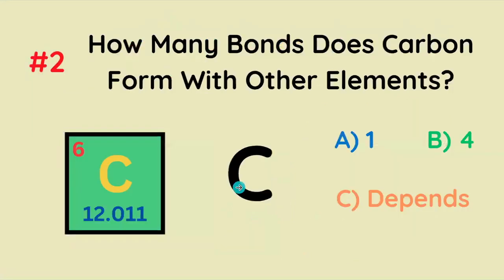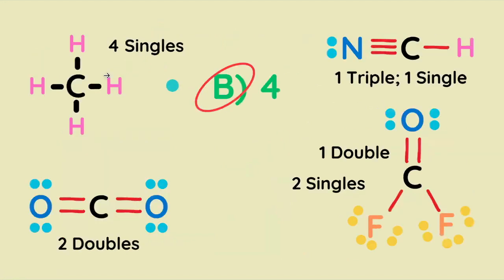Number two, how many bonds does carbon form with other elements? One, four, or it depends? It's going to be four. It's either going to be four singles, two doubles, a triple and a single, or a double and two singles.